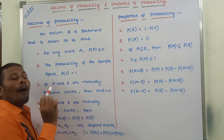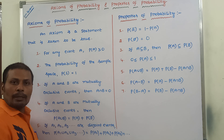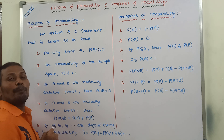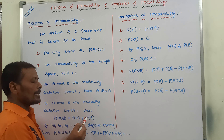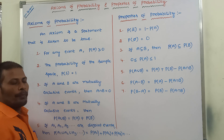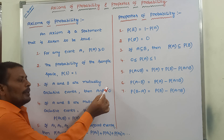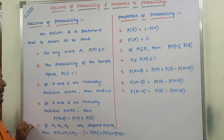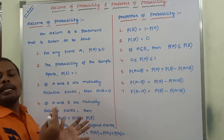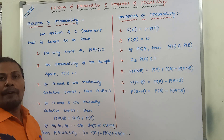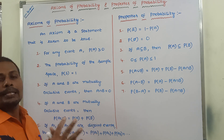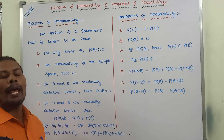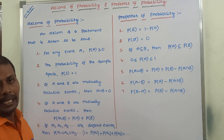When A and B are two mutually exclusive events, then P of A union B is equal to P of A plus P of B, where A intersection B is equal to 0. Next, we are taking some events A1, A2, A3, etc. These are some events. These events are called disjoint events.